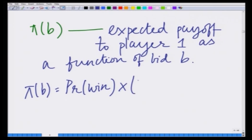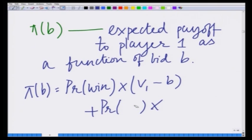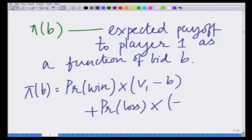Plus the probability of loss times his payoff if he loses. Remember, he pays his bid irrespective of the outcome. So in case he loses, he does not get the object but simply pays his bid b. Therefore, his net payoff when losing is 0 minus b, which equals minus b.